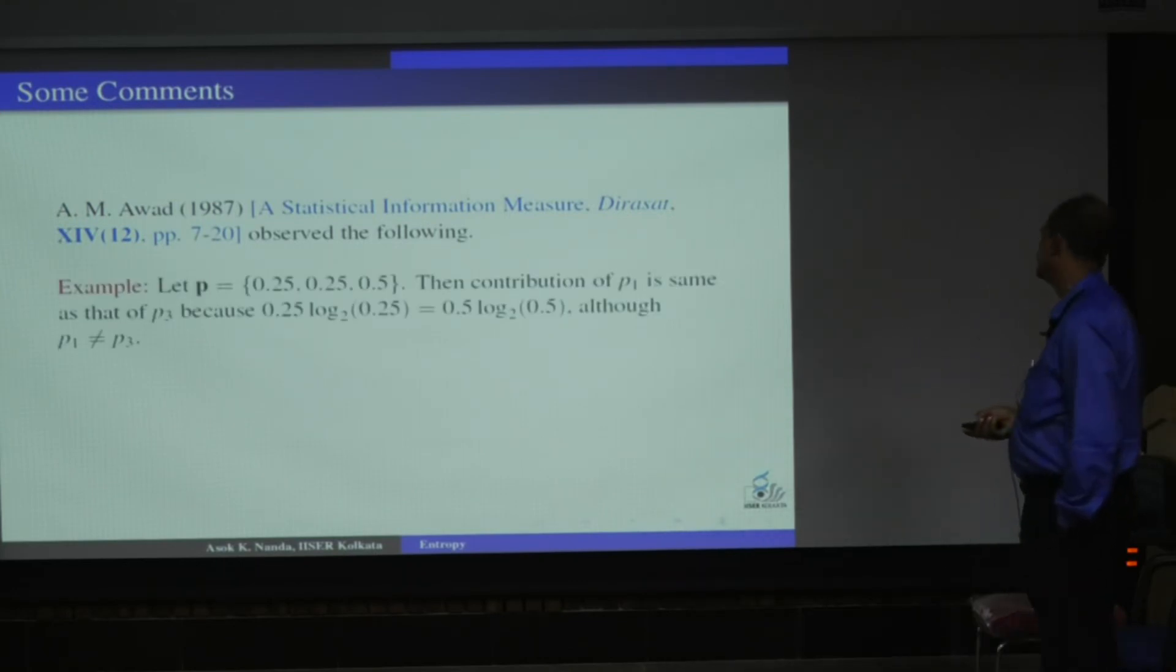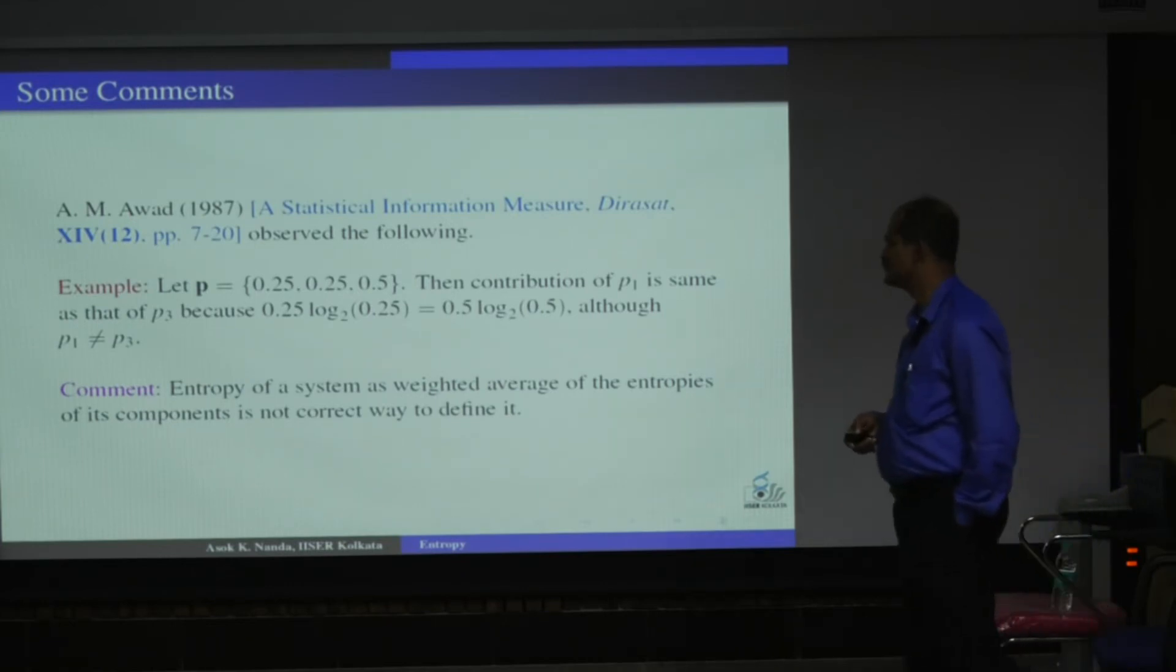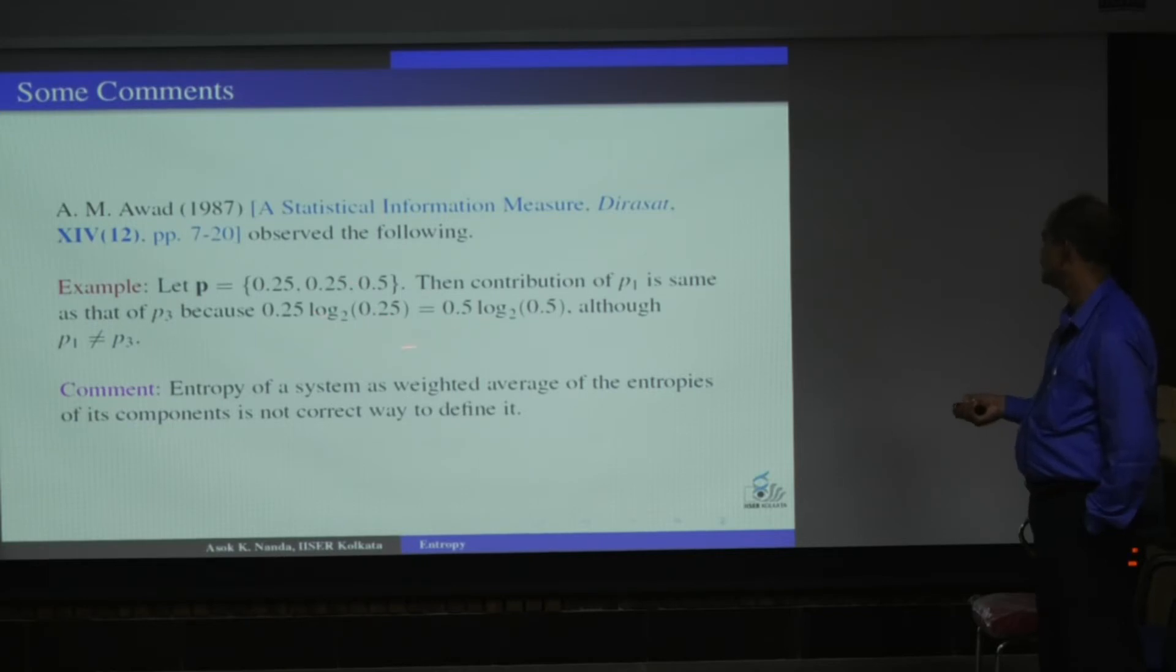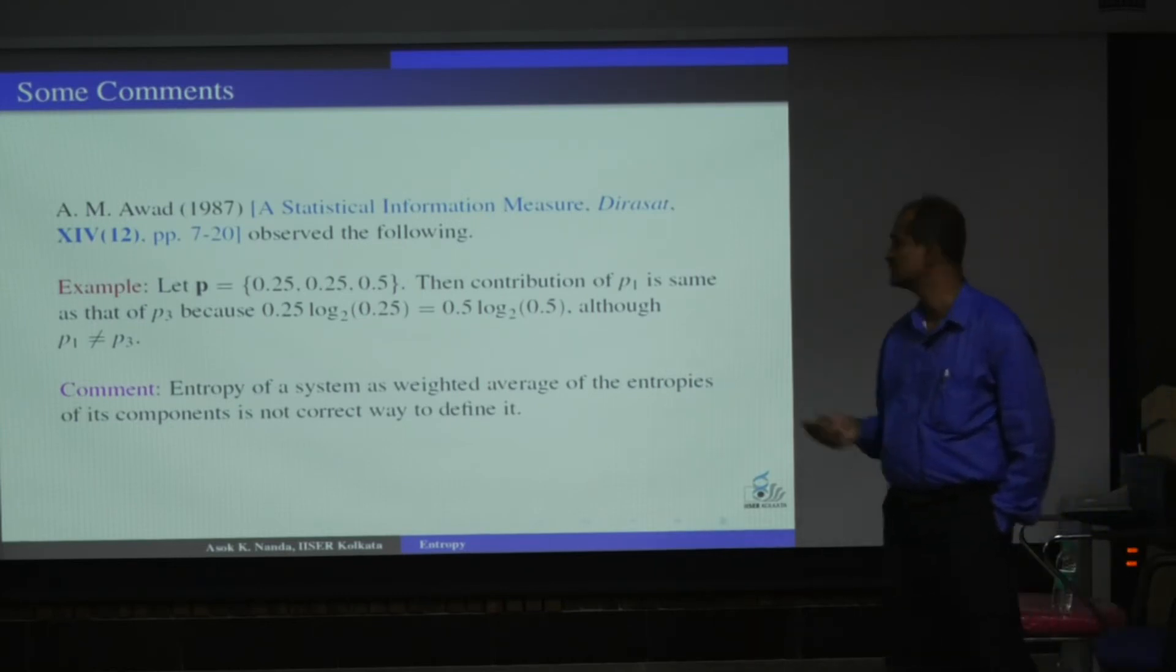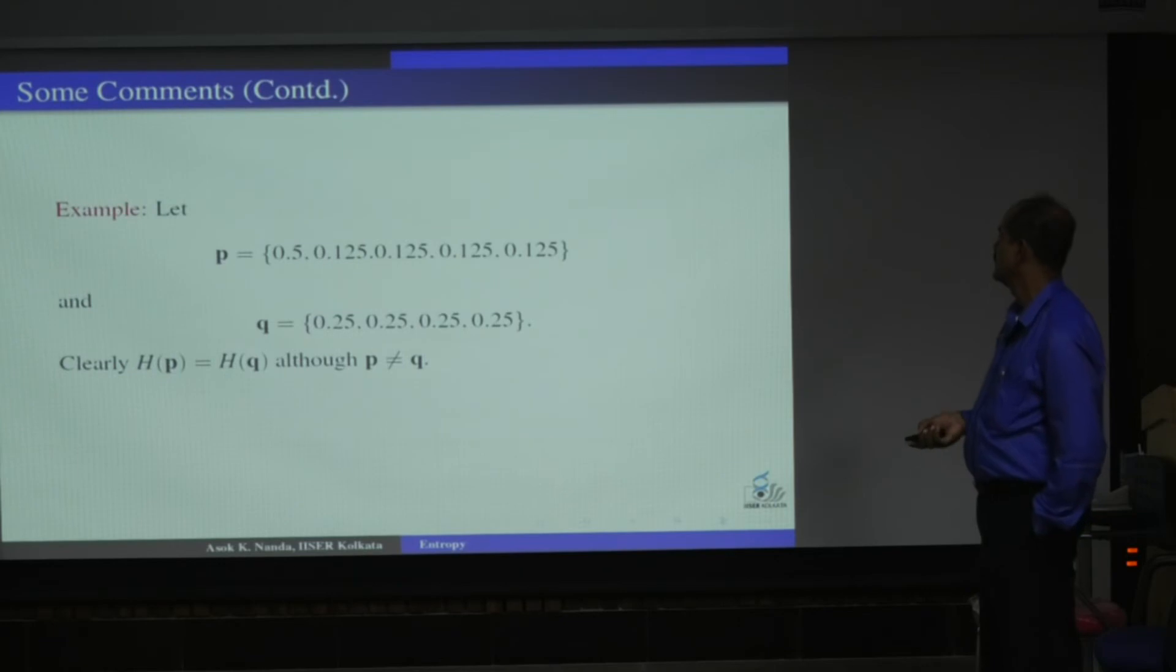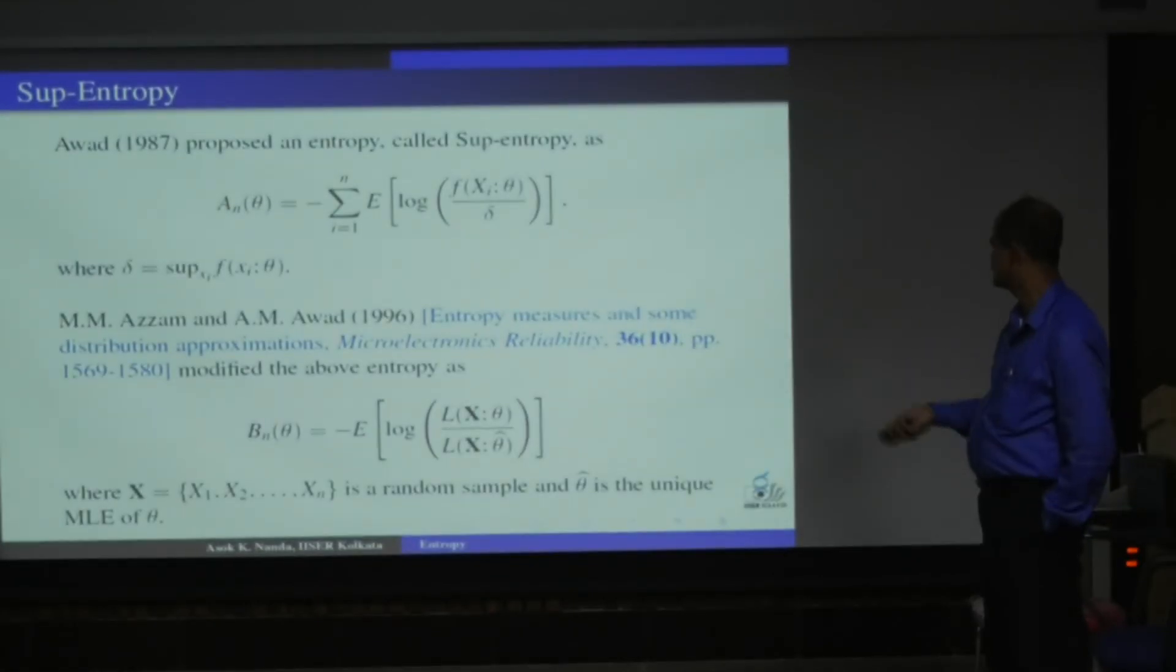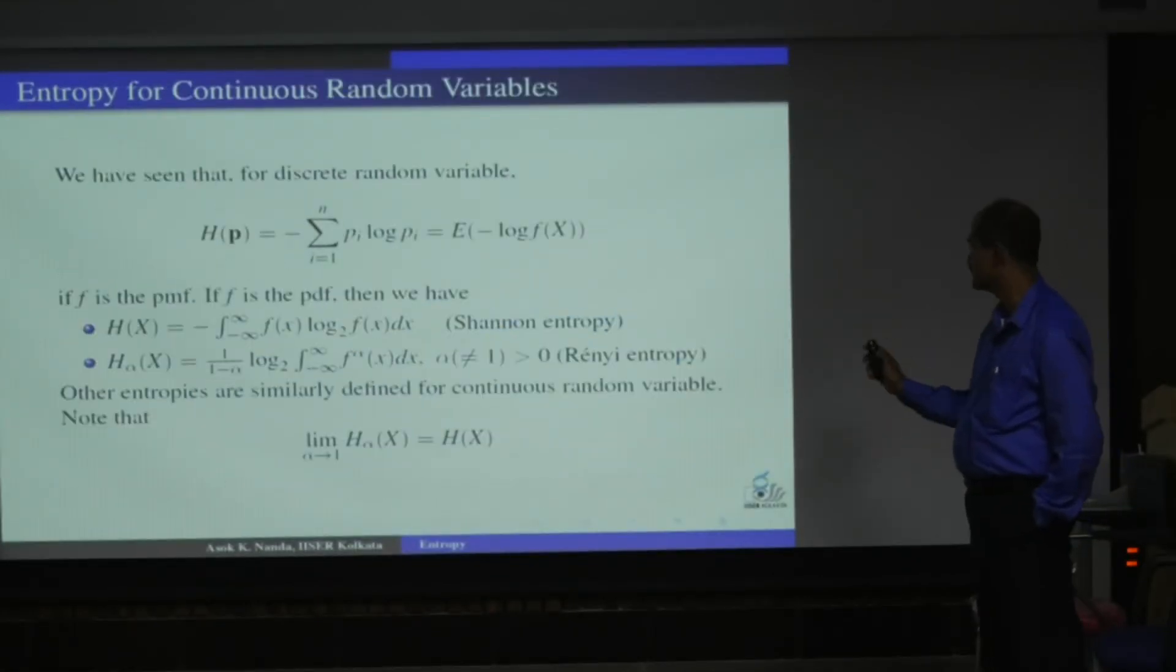Now A.M. Awad, he has eventually got a couple of limitations of Shannon entropy. You see here, for 0.25, 0.25 log 0.25 and 0.5 log 0.25, the value is the same, but the probability is different. So clearly, the entropy of a system as weighted average, sigma pi log pi, is not the correct way of defining entropy. This is actually Awad's observation. He has also given a different example here, that P is this, a different set. P is a different set, having same H(P) and H(Q). So here distributions are not identifiable in terms of entropy. These are couple of drawbacks, and that's why again Awad has defined different kinds of entropy.